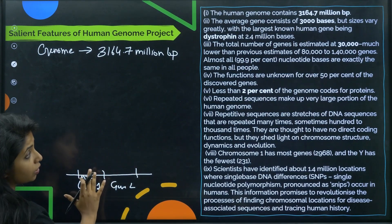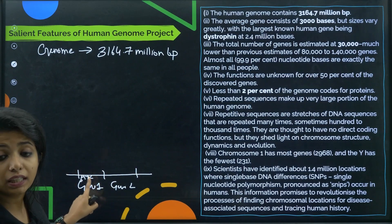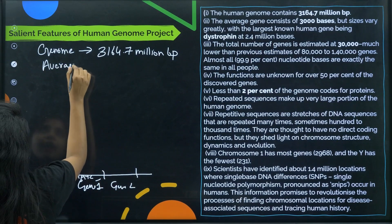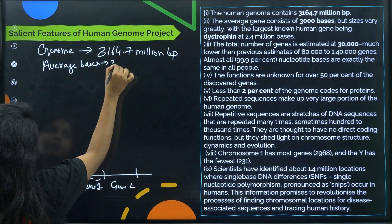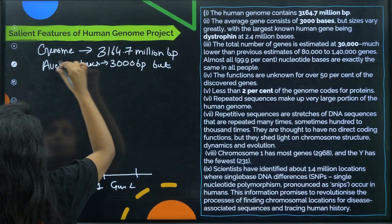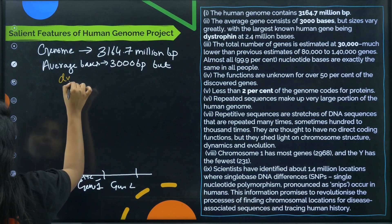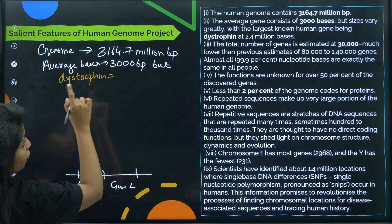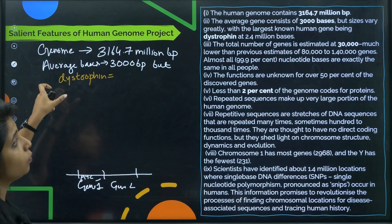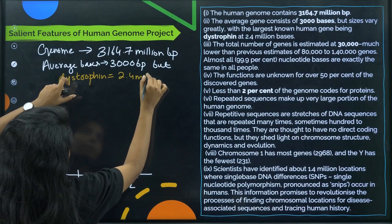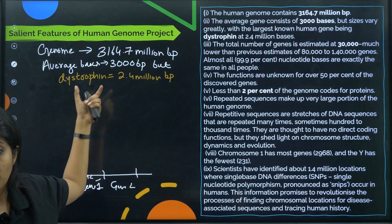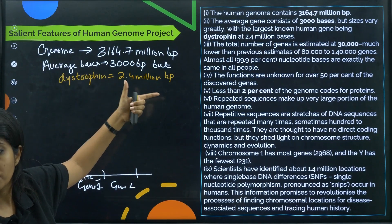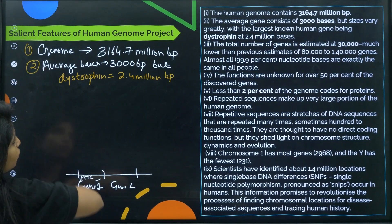The average gene consists of 3000 bases, but sizes vary greatly. The largest known human gene is dystrophin, at 2.4 million bases — that single gene coding for dystrophin has 2.4 million base pairs. The total number of genes is estimated at 30,000, which is much lower than the previous estimates of 80,000 or 140,000.